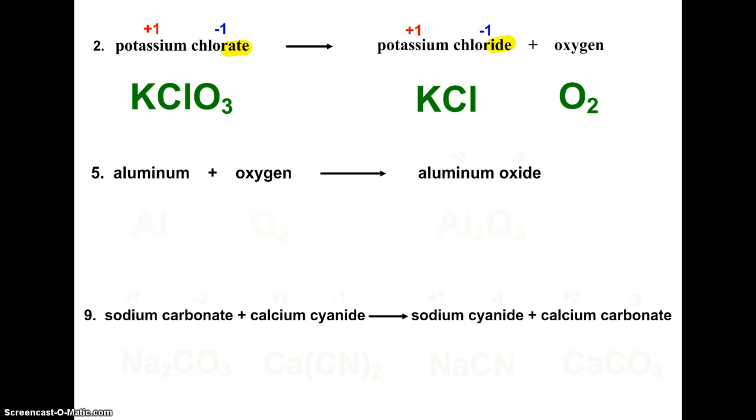Looking at number five, we have aluminum and oxygen reacting to form aluminum oxide. Aluminum element is just Al. We're not looking for its charge or anything yet. It's just an element, symbol Al. Oxygen, as we just saw, is part of Hofbrinkel, so that is O2.